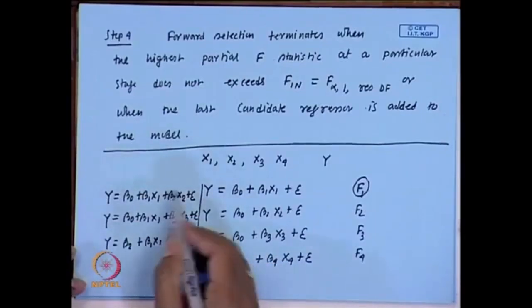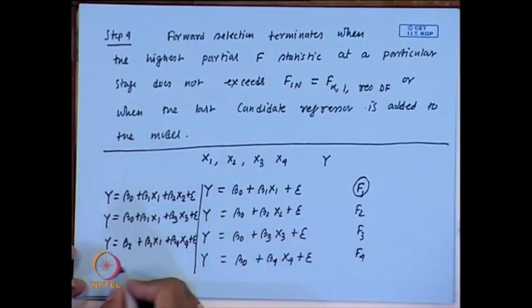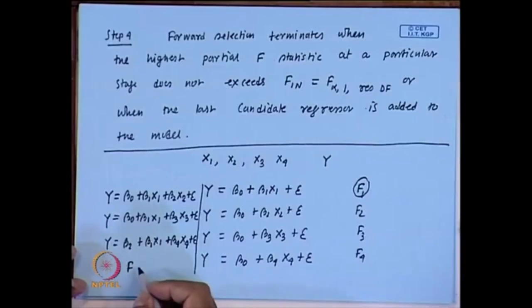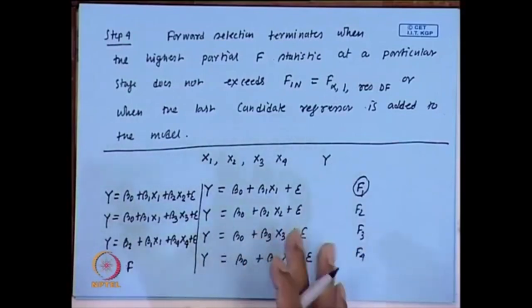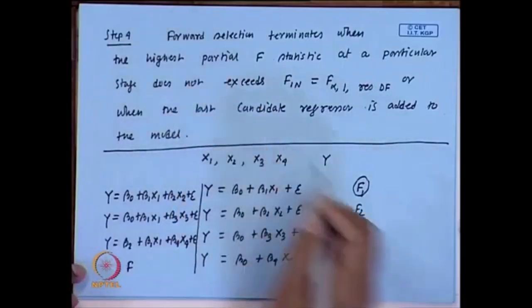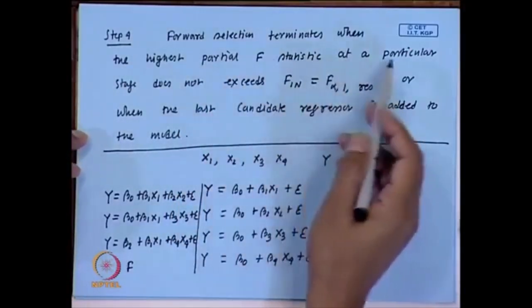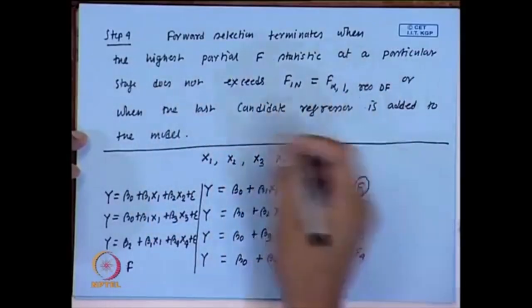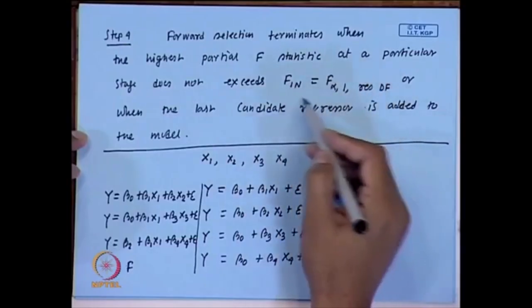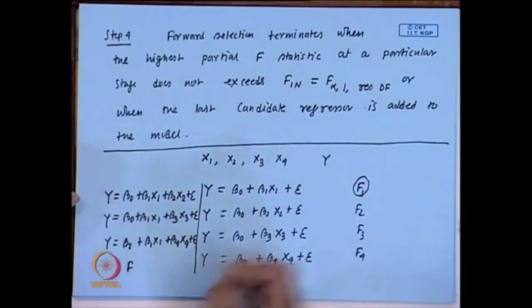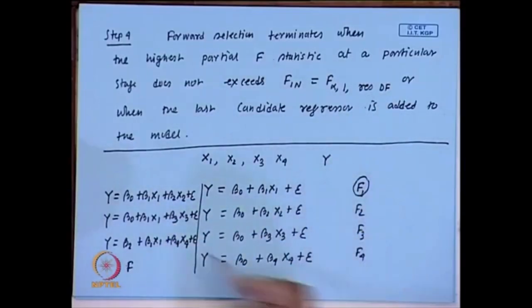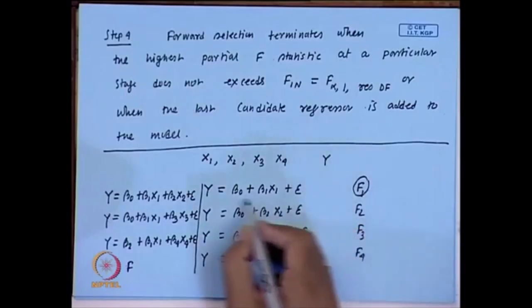We compare in the presence of x1 which is best — whether x2, x3, or x4 — evaluated by computing the partial F-value. The highest partial F-value determines which regressor is included. We keep doing this and there is a stopping criteria: forward selection terminates when the highest partial F-statistic at a particular stage does not exceed the threshold value. If the partial F-value is not greater than the threshold, x1 is enough and we stop there.